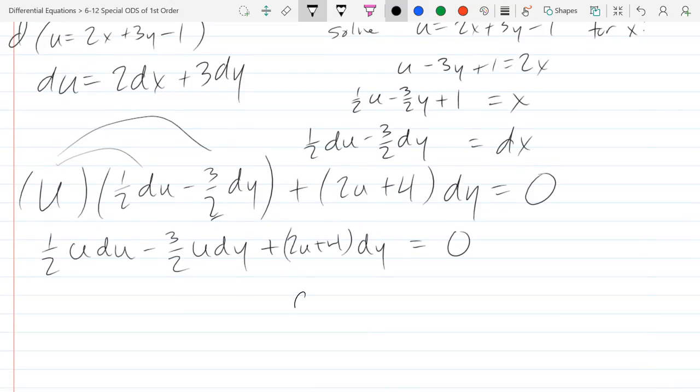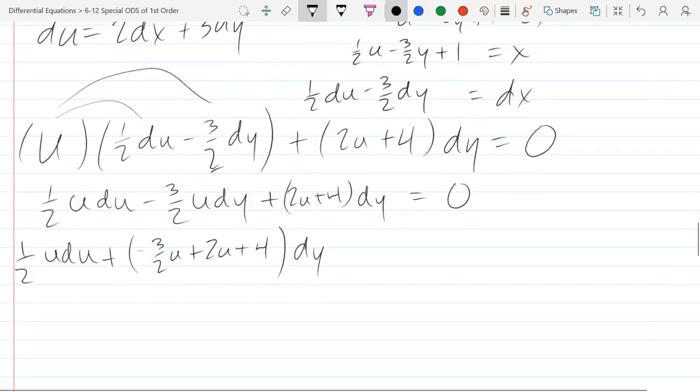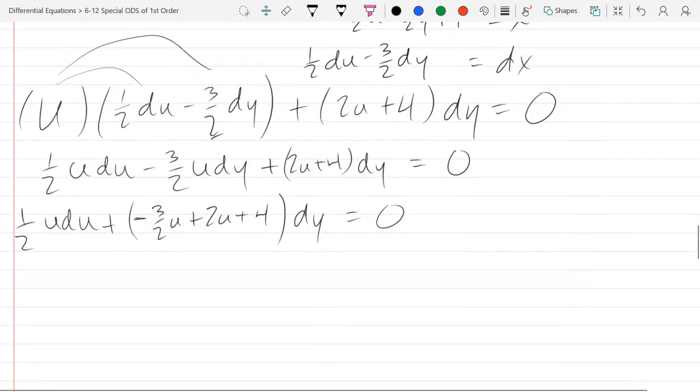So now we'll collect our dy's together. And what's in front, we have 2u plus 4 minus 3 halves u. And finally, we'll combine the u's together minus 3 halves, so that's plus 2 is positive 1 half.